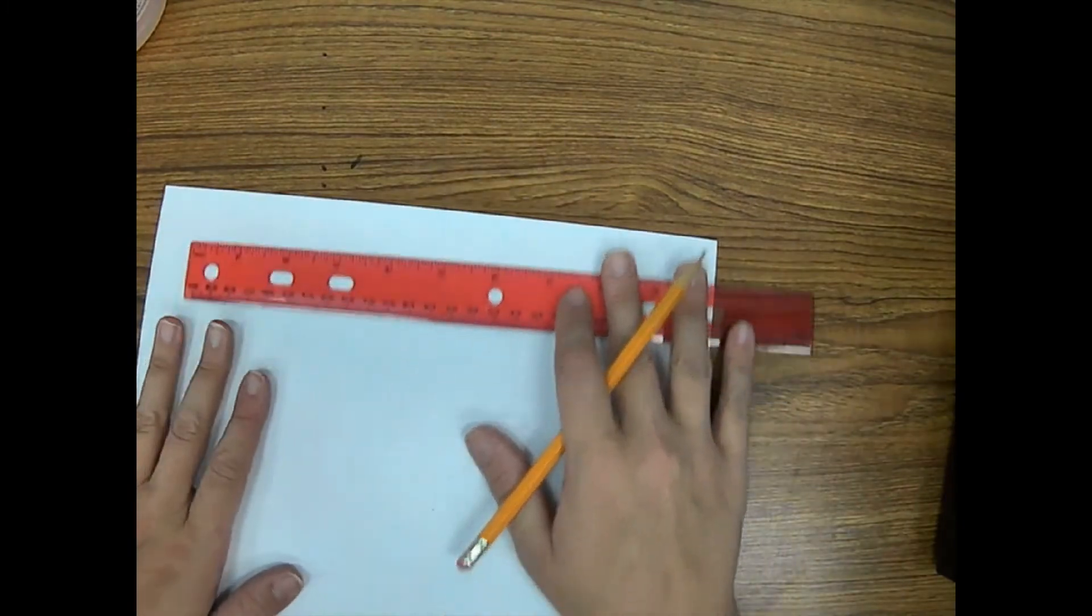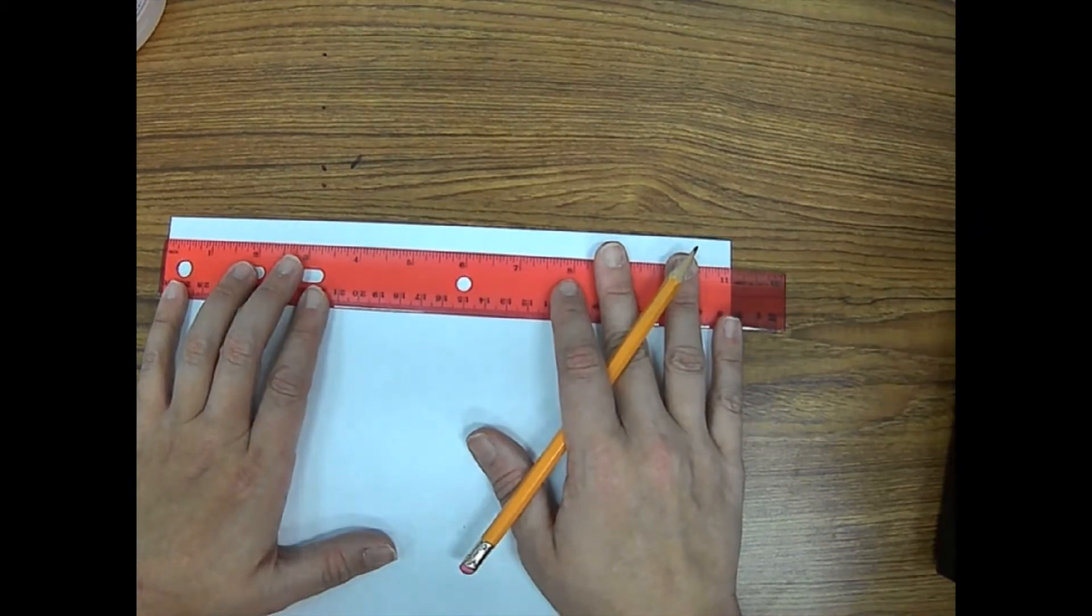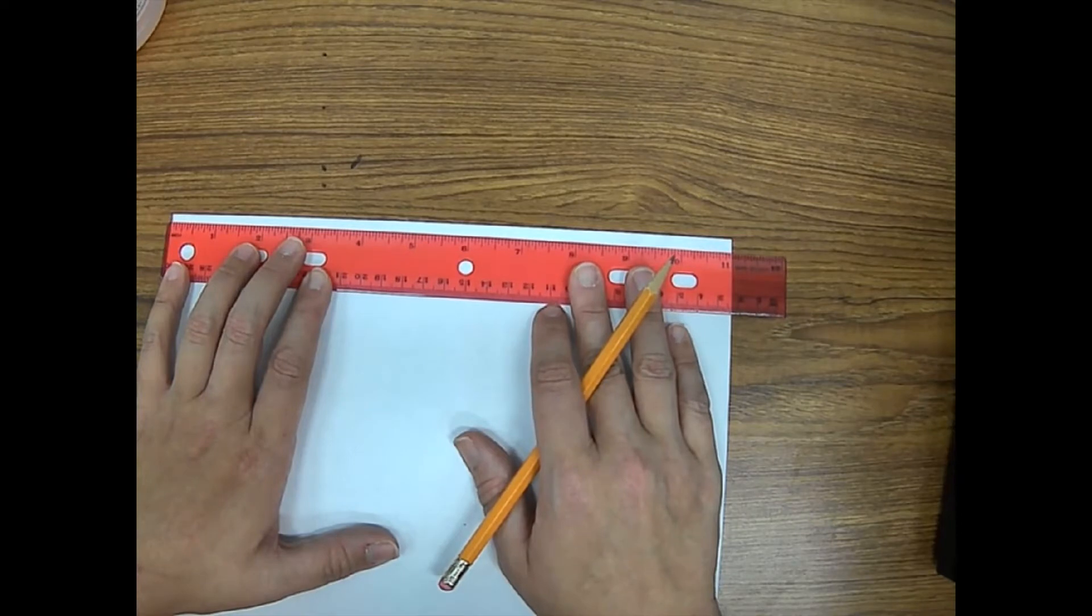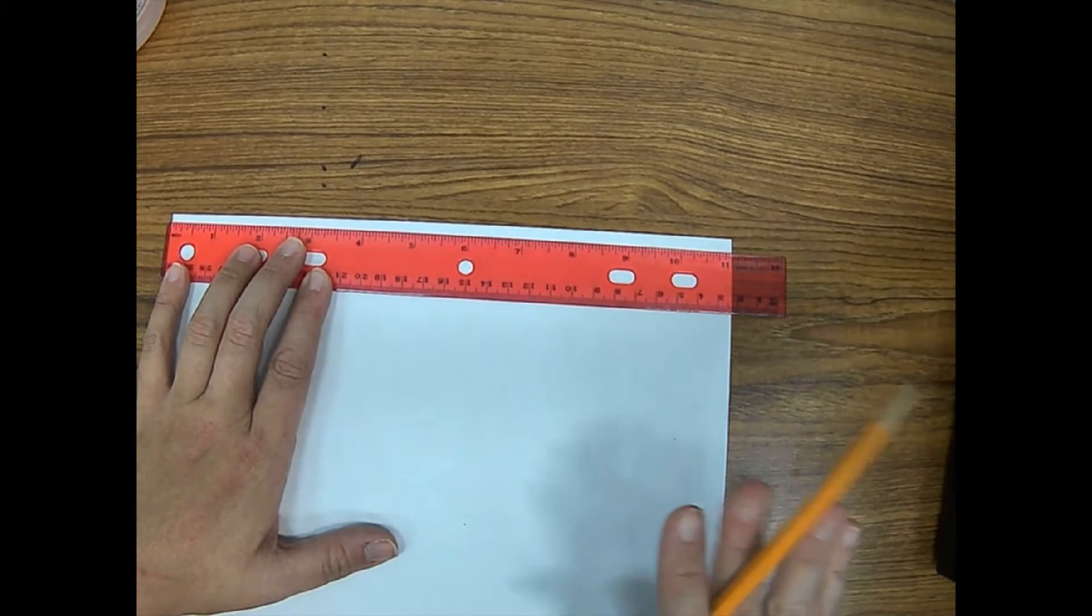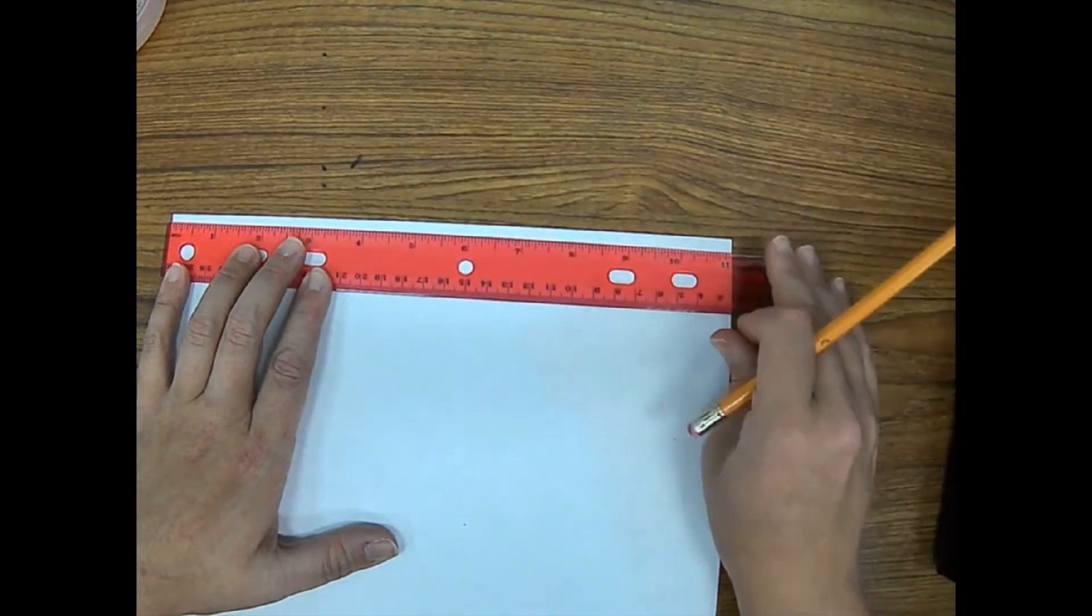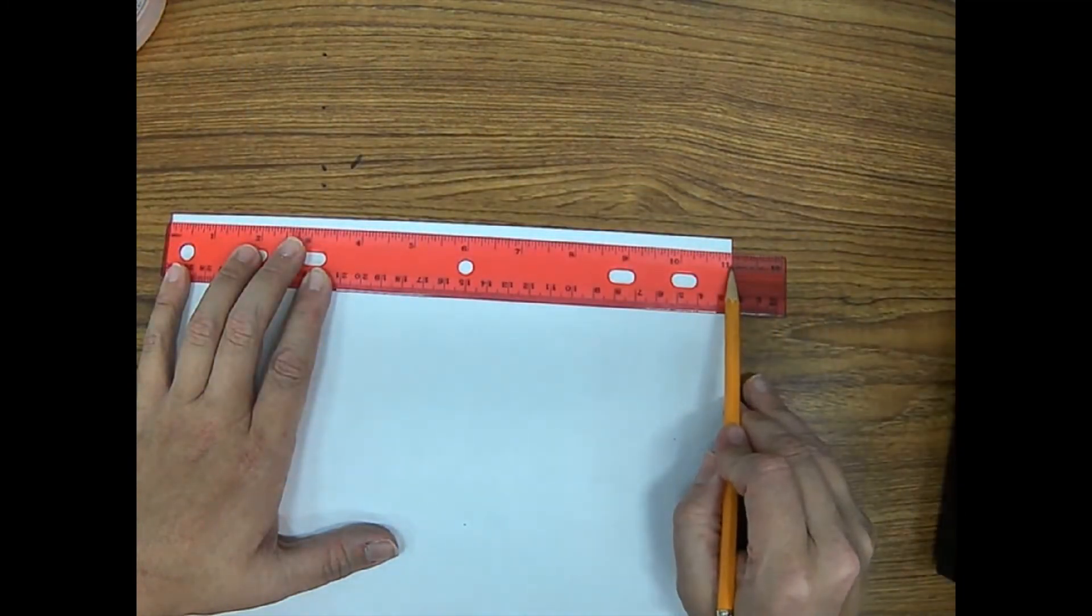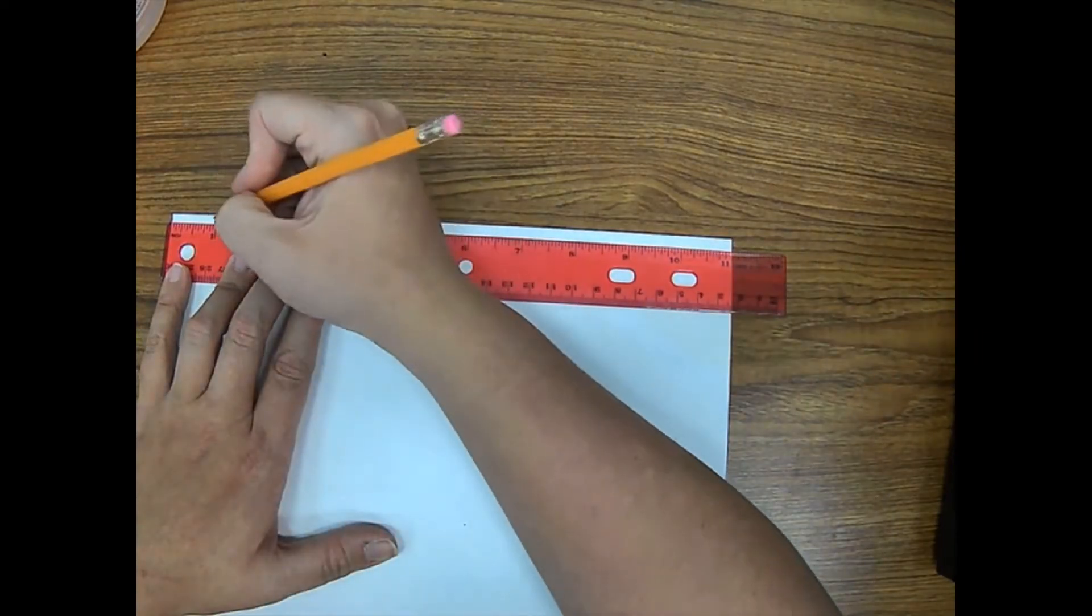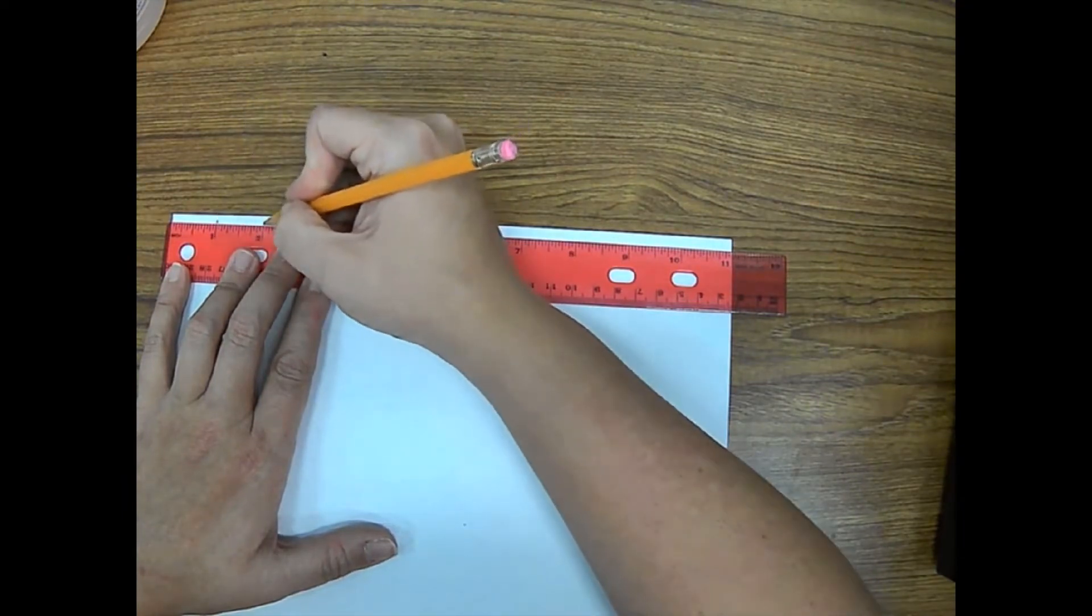So what you're going to do first is you're going to lay down your ruler here and I go pretty close to the top, but I don't go all the way to the top. Now, this is an 8.5 by 11 inch piece of paper. So the great thing about that is if you line this little inch line up with this edge of the paper and you line your 11 inch mark up with the edge of the paper, you should know that your ruler is straight. So what I'm going to do is every inch, I'm just going to make a little mark, really light.